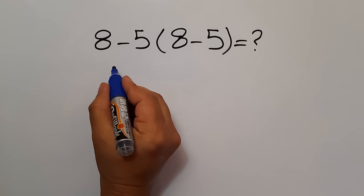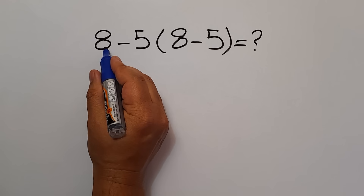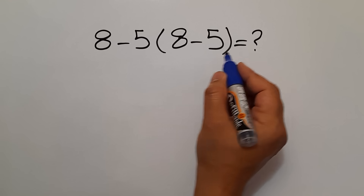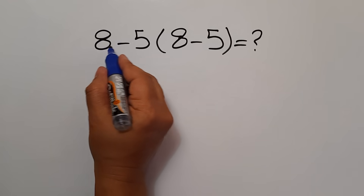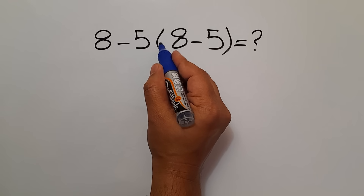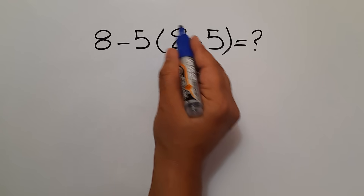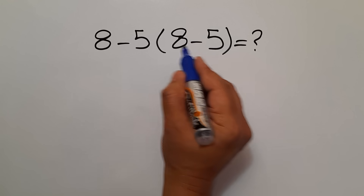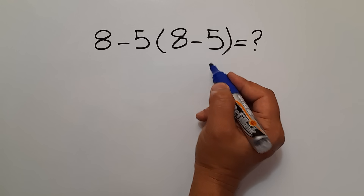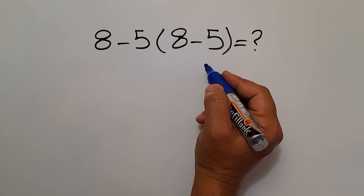Hey guys and welcome to this video. In this video, we want to find the value of this expression, which is 8 minus 5, then times these parentheses. And inside these parentheses, we have 8 minus 5 again. Are you ready to solve?